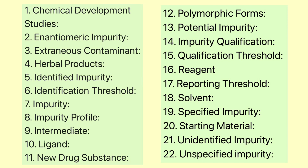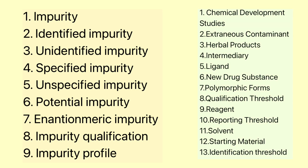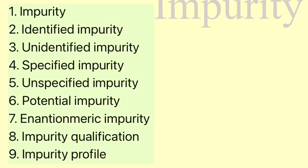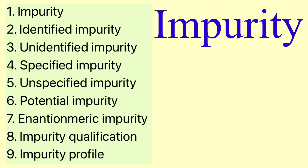There are around 22 glossary terms given in the ICH Q3A guideline. Today I will cover 9 of these glossary terms, and the remaining 13 you can read on your own as these are very simple and you can easily understand them. So let us begin with the very first glossary term.